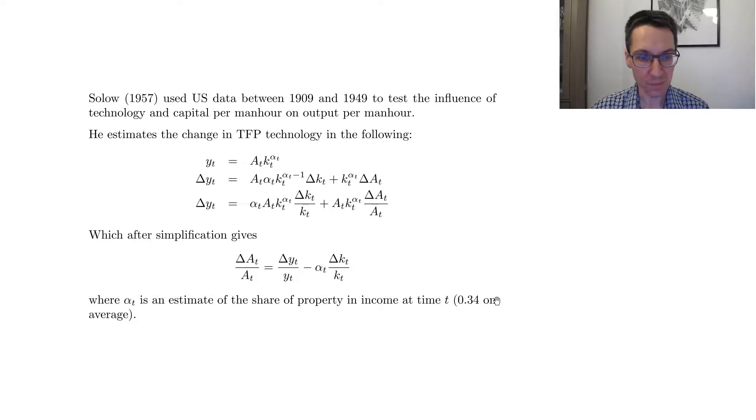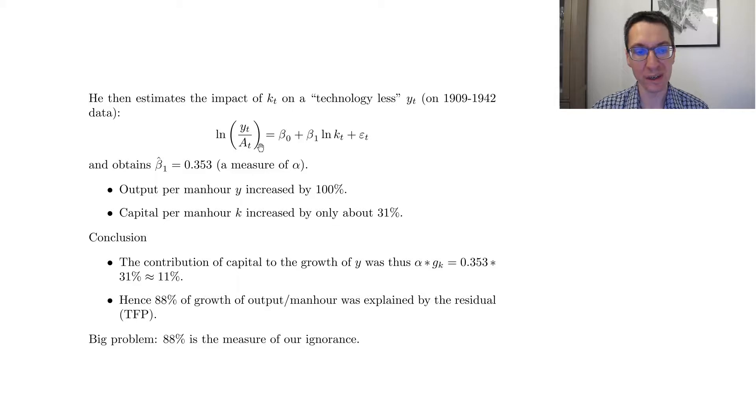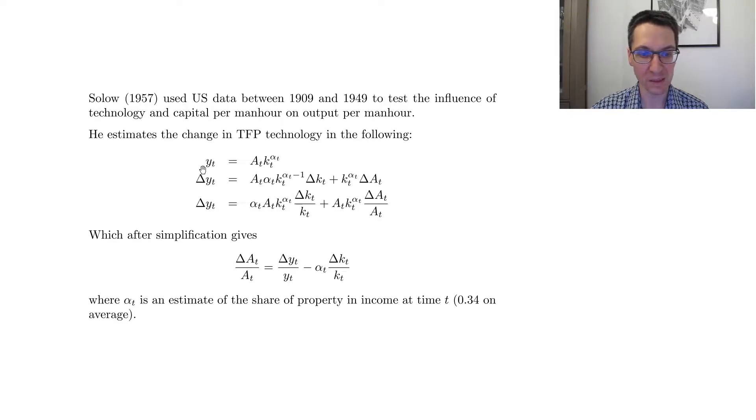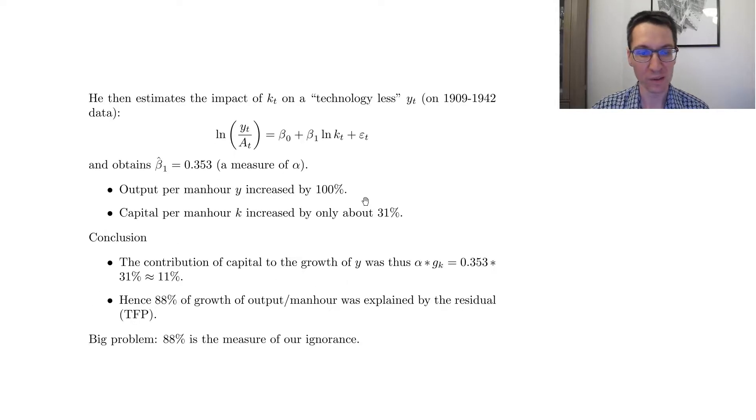And then what he does is he says, okay, now that I have technology, I can remove the effect of technology on output. So imagine what output would be if technology had stayed the same. So if you look at it here, the output is technology multiplied by capital to the alpha_t. So if we divide by technology every year, then we just have a simple function of capital. So then he wants to estimate what is the impact of capital per man hour on this output per man hour divided by technology every year.